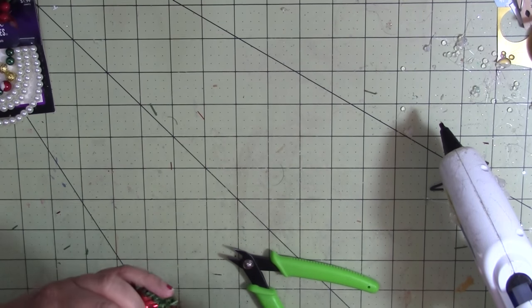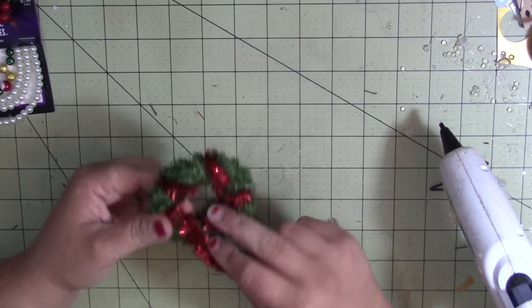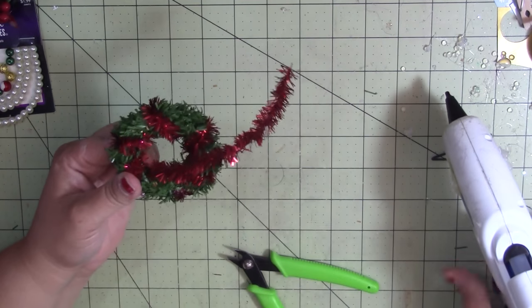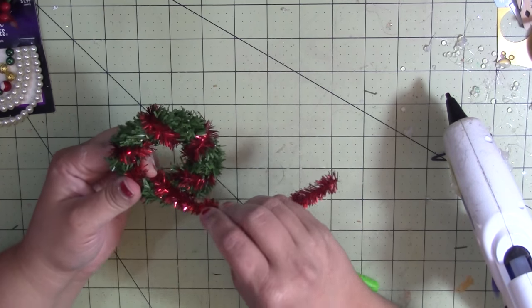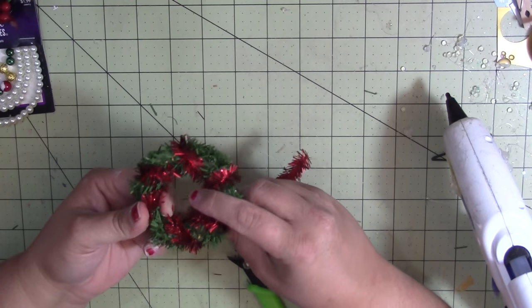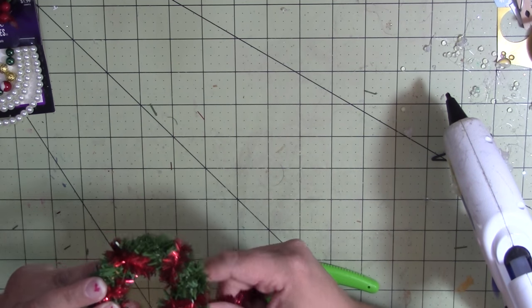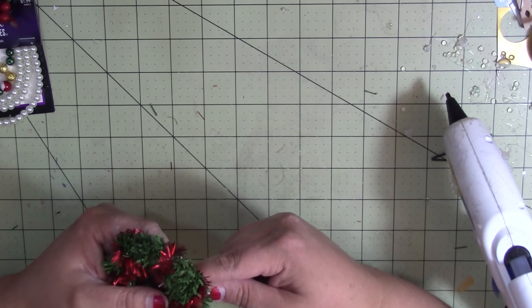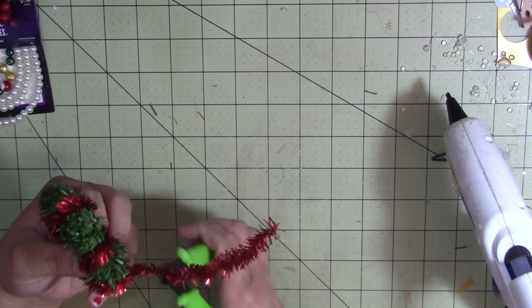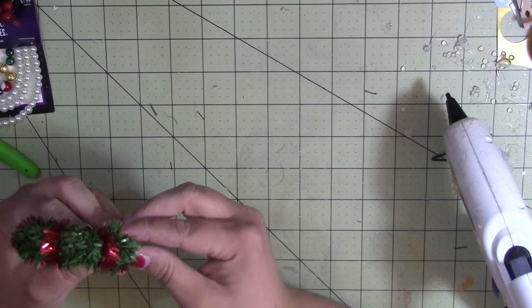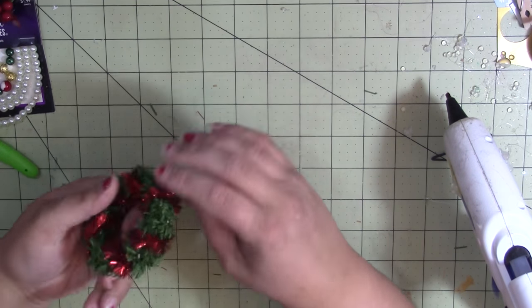I just come back to where we glued it initially, put another bead of glue, and glue it down. Once that cools, you can just snip the excess off. Just like that. Now comes the part where you decorate.